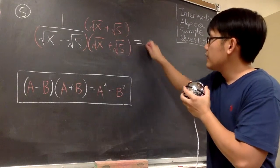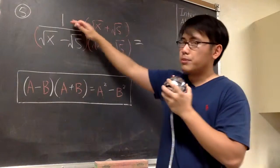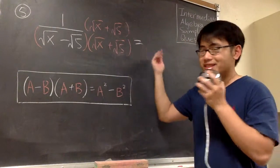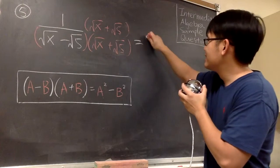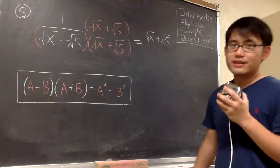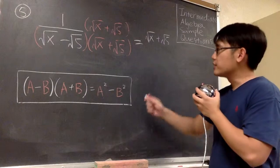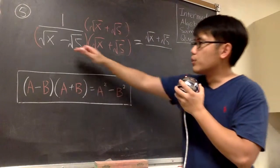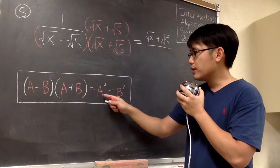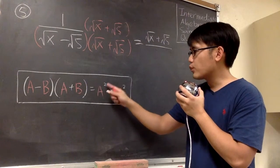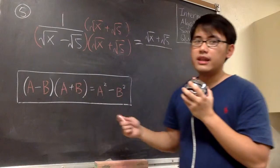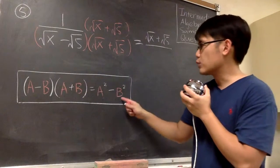Let's multiply out the top. We have 1 times square root of x plus square root of 5, which is just square root of x plus square root of 5 — nothing changes. For the denominator, to multiply this out, we can use the result here. We are going to end up with a squared minus b squared, where the a is the square root of x and the b is the square root of 5.